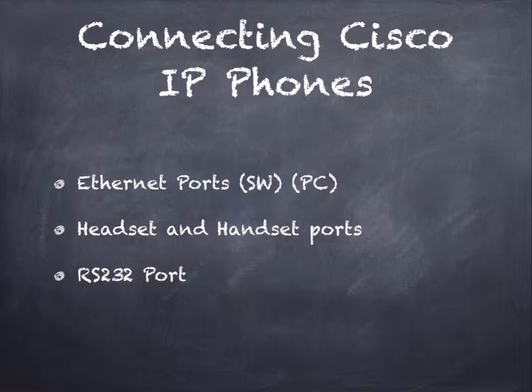The PC port on the back of the phone is optional to connect to a PC. A situation might arise where you have a PC plugged into an Ethernet port in an office, and there's not a second Ethernet port available for the phone. What you can do is unplug the PC from the wall, plug the PC into the PC Ethernet port on the phone, and then plug the phone into the wall. The phone will then act as the switch for the PC and connect into the network.